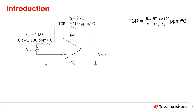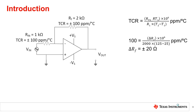In this example, let us further assume that RF, the feedback resistor, has a value of 2 kilo ohms and RN, the input resistor, has a value of 1 kilo ohm. Both resistors have a TCR of plus or minus 100 ppm per degree Celsius specified at 25 degrees Celsius. This results in an ideal inverting gain of 2. Solving the TCR equation for 125 degrees Celsius results in a delta change of plus or minus 20 ohms for RF and a delta change of plus or minus 10 ohms for RN.